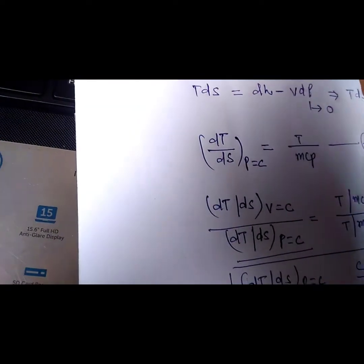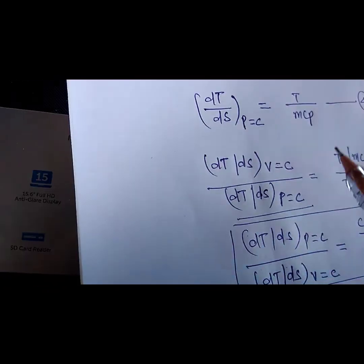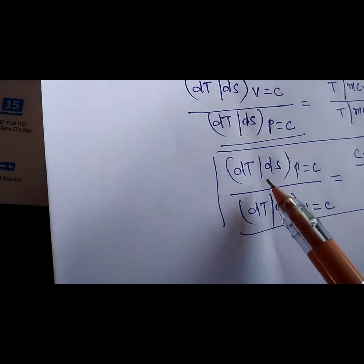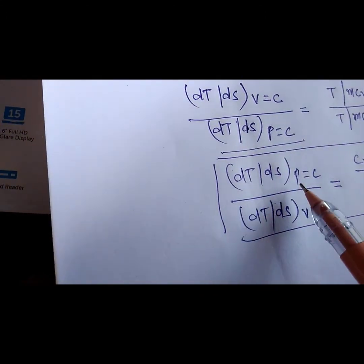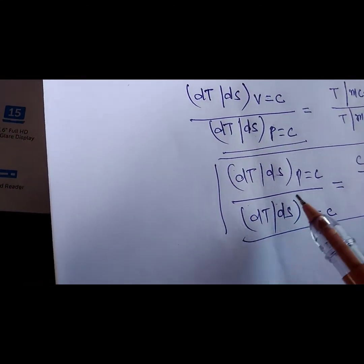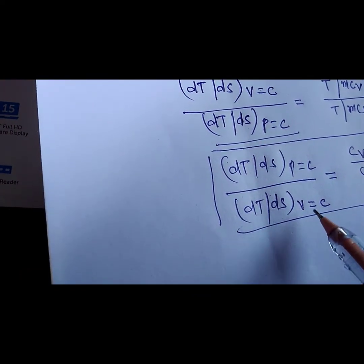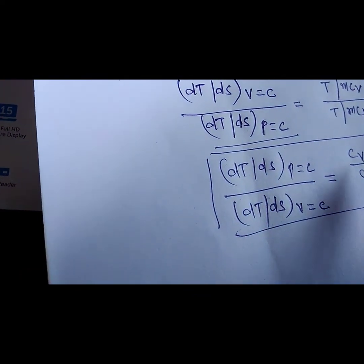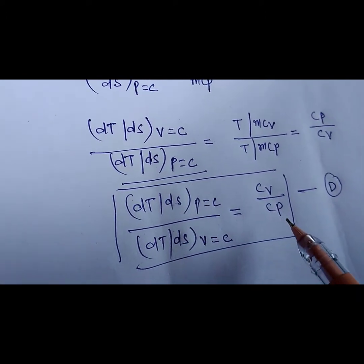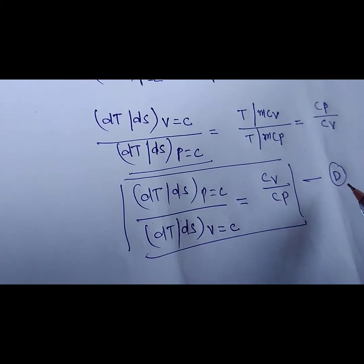We have to find the ratio of the constant pressure line slope to the constant volume line slope. So (dT/dS) at constant pressure divided by (dT/dS) at constant volume equals CV upon CP. Therefore option D is the correct answer.